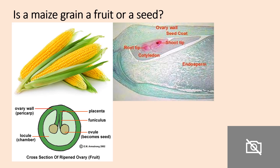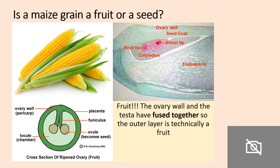A question that often comes up: is maize grain a fruit or a seed? Maize is actually categorised as a fruit, because the ovary wall has fused with the testa, so therefore the outer layer is technically a fruit.